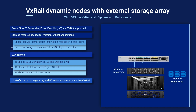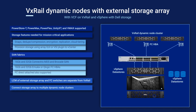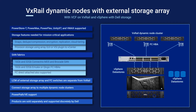LCM of external storage arrays and fiber channel switches are separate from VxRail, except in the case of PowerStore storage with dynamic apps on. A single storage array can connect to multiple dynamic node clusters for independent scaling of compute and storage. Virtual PowerPath is supported for multi-pathing capabilities to the storage array — supported with PowerStore, PowerMax, and Unity XT on fiber channel, iSCSI, or NVMe over fiber channel protocols. Keep in mind that VxRail dynamic nodes and external storage arrays are sold separately, so while both are supported by Dell, it wouldn't be as an integrated solution.